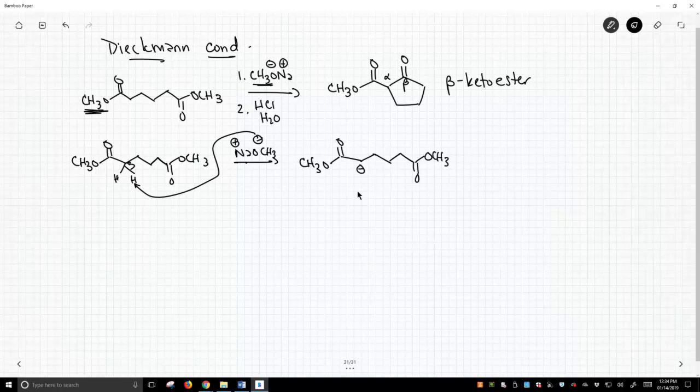This enolate forms. It is a nucleophile, so it's looking for an electrophile. As it turns out, down the chain in the molecule, we have an electrophile, a carbonyl. So let's see how far away it is. It's one, two, three, four, five. It's five atoms away.